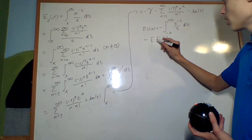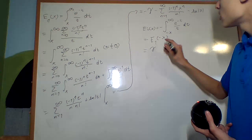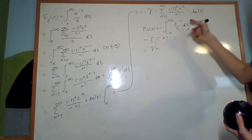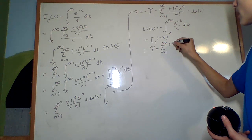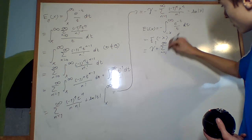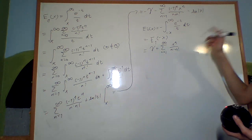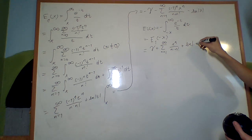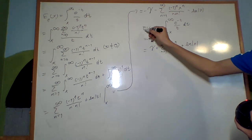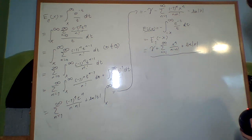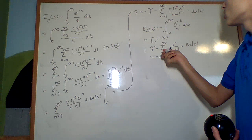Now, if I plug in the expression for E1(x) evaluated at negative x and take the negative of it, the negative 1 to the n and the negative x to the n factors cancel, and I get: gamma plus the sum from n equals 1 until infinity of x to the n over n times n factorial, plus the natural log of the absolute value of x. This completely eliminates all the nastiness — no alternating signs — giving a nice, concise, mostly positive sum that works much better overall.